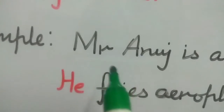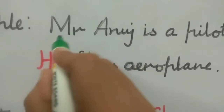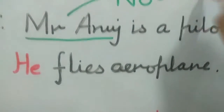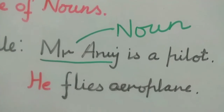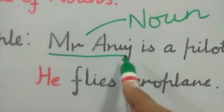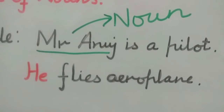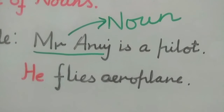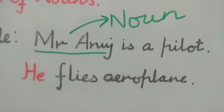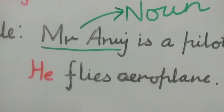See the example. 'Mr. Anuj is a pilot. He flies aeroplane.' Mr. Anuj is a noun — it is the name of a person. You know it, right? Earlier I explained about nouns. The naming words are called nouns. Mr. Anuj is a name of a person, so it is a noun. When we are talking about a person, thing, or place, we do not repeat the name.